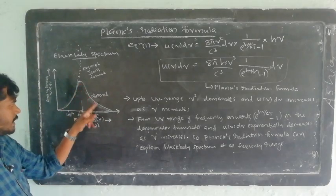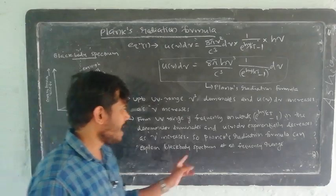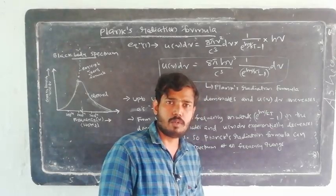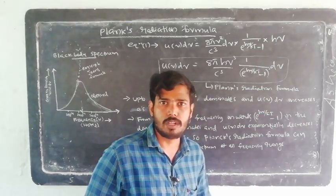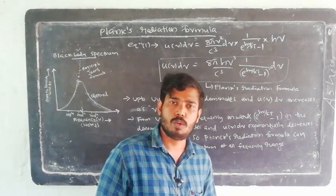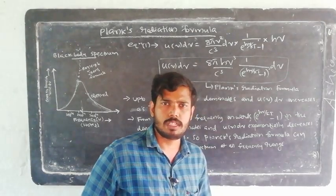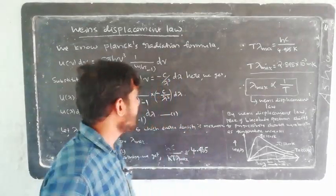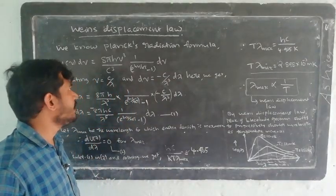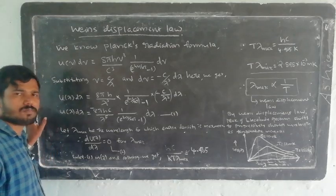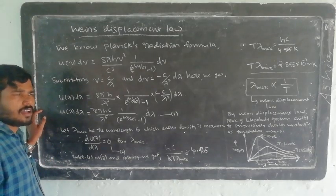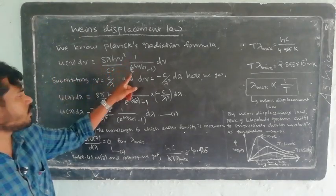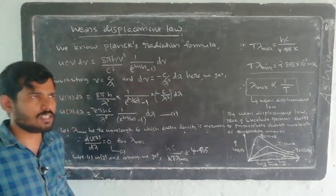So u(ν)dν exponentially decreases as ν increases from the ultraviolet range of frequency onwards. Therefore, Planck's radiation formula can explain the black body spectrum at all frequency ranges, resolving the ultraviolet catastrophe. Planck's radiation formula: u(ν)dν = 8πhν³/c³ · 1/(e^(hν/kT) − 1) · dν.